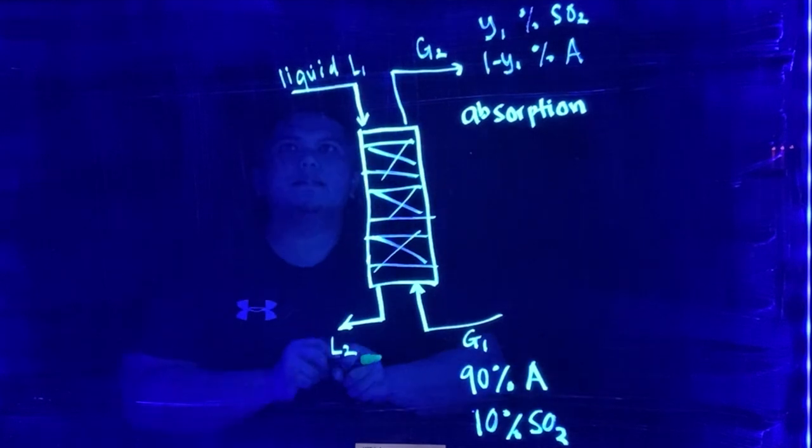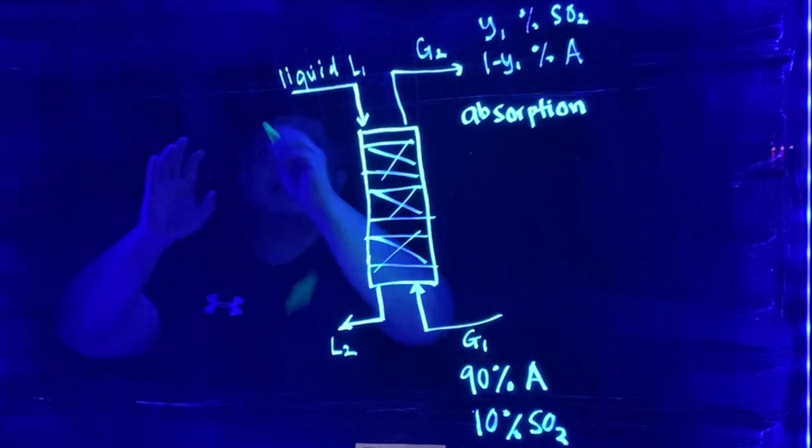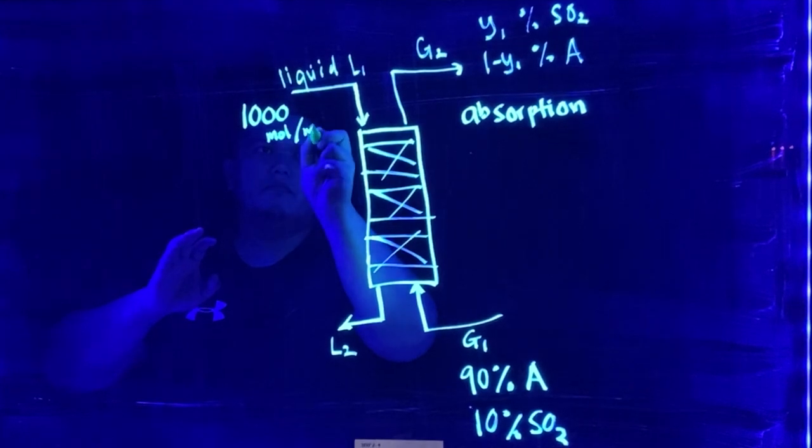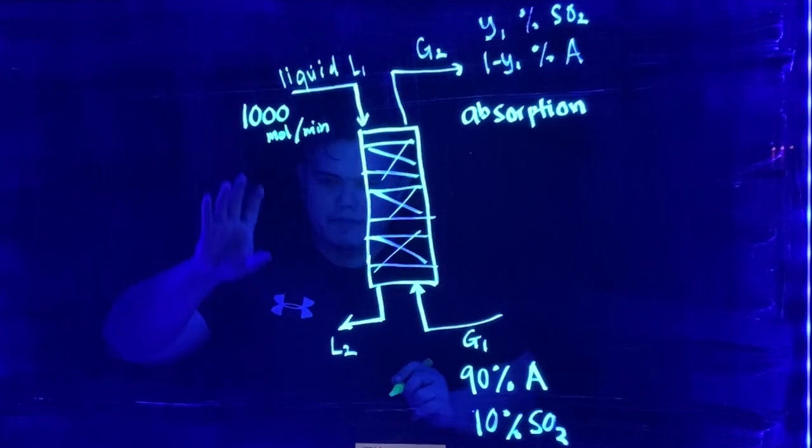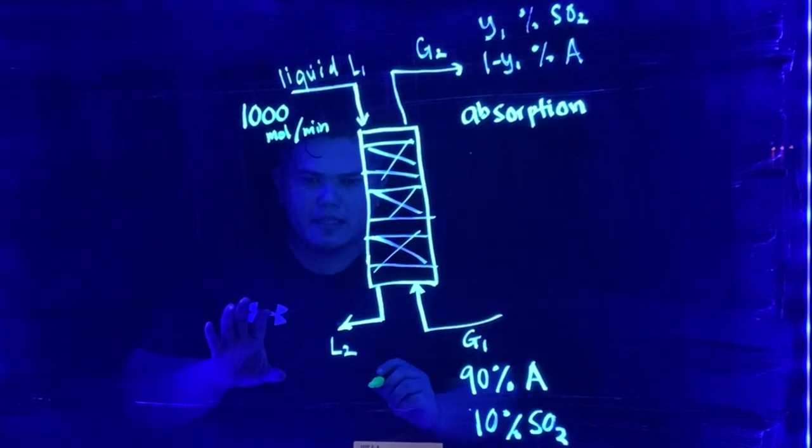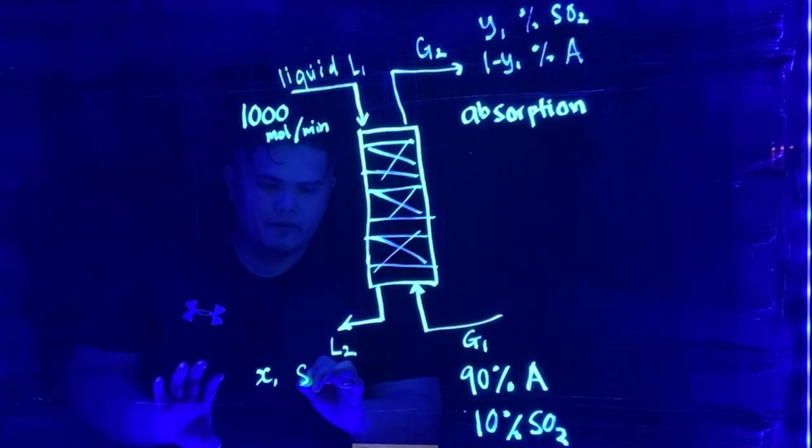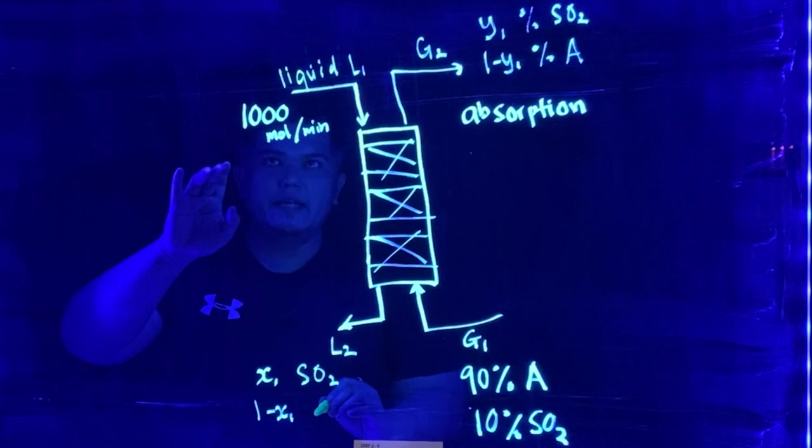Here, we assume that there is pure solvent which is coming in at 1,000 mole per minute. And then after here, we have actually liquid L2, which is unknown, but then it also contains X1 of SO2.